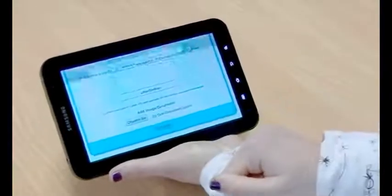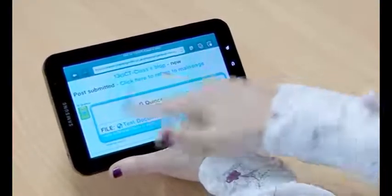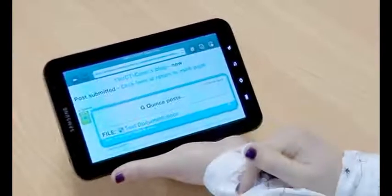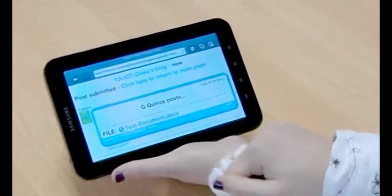So now that's done I'm going to hit add post and as you can see that's now put that document as a link to the file in my blog post.